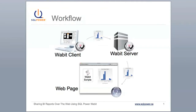So here's how it works. The SQL Power Wabit client application, which is available as a free download, is used to create and manage Wabit objects such as queries, charts, reports, OLAP, and more. In order to make Wabit objects web accessible, they must be saved on a Wabit server, which is a component of the SQL Power Wabit Enterprise Edition. Saving your workspace on the Wabit server allows your Wabit objects to be shared based on fine-grained security rules you can define.